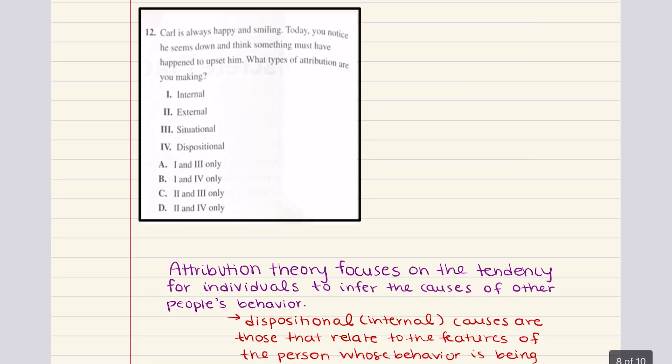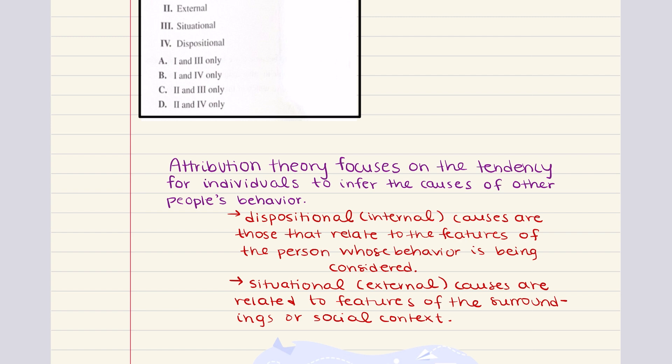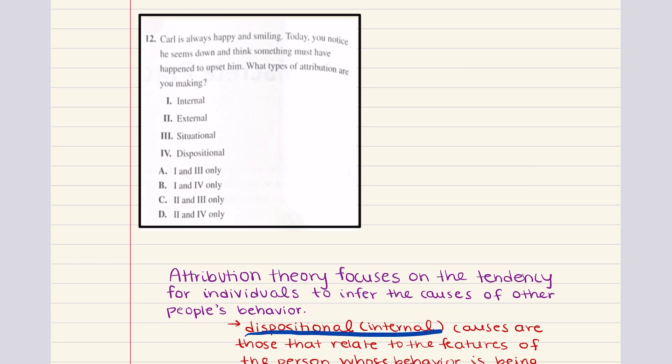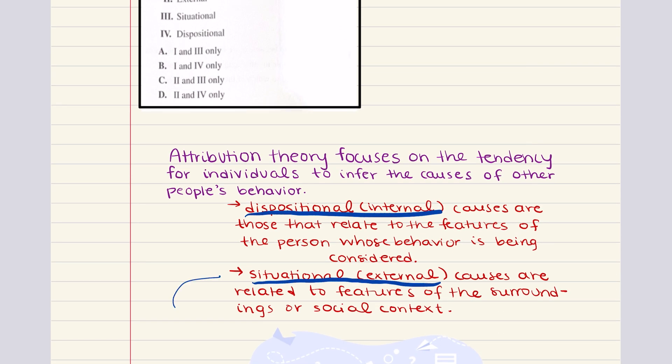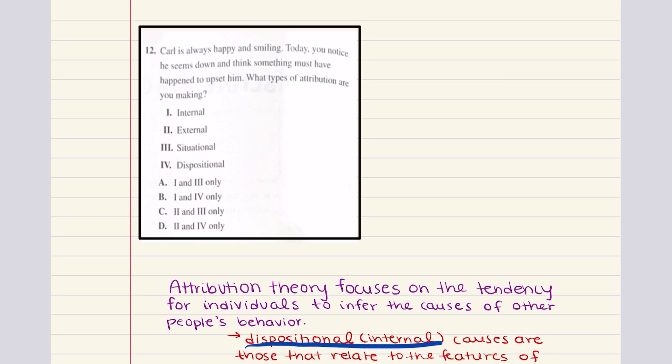12 says, Carl is always happy and smiling. Today you notice he seems down and think something must have happened to upset him. What types of attributions are you making? Now we talked about attribution theory, how it focuses on the tendency for individuals to infer the causes of others' behavior. We have dispositional or internal causes. Those are those that relate to the features of the person whose behavior is being considered. And then there's situational or external causes. These are related to features of the surroundings or social context. Now you think after seeing Carl be sad, you think something happened to him to make him upset, which means that you are demonstrating situational or external causes towards his sadness. And so that means statements 2 and 3 are correct, not 1 or 4. And so the correct answer for 12 is going to be C.